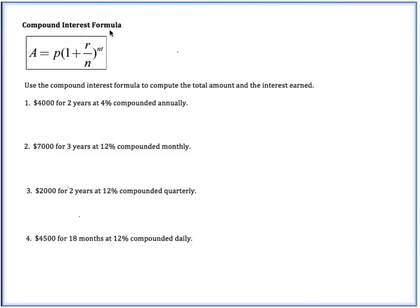Alright, so let's go ahead and use our compound interest formula here to compute the total amount and the interest earned. So we're going to be looking for 2 things here. We're looking for the A as well as the I. And remember the interest earned is going to be the amount that your money grows to minus the amount that you invested.